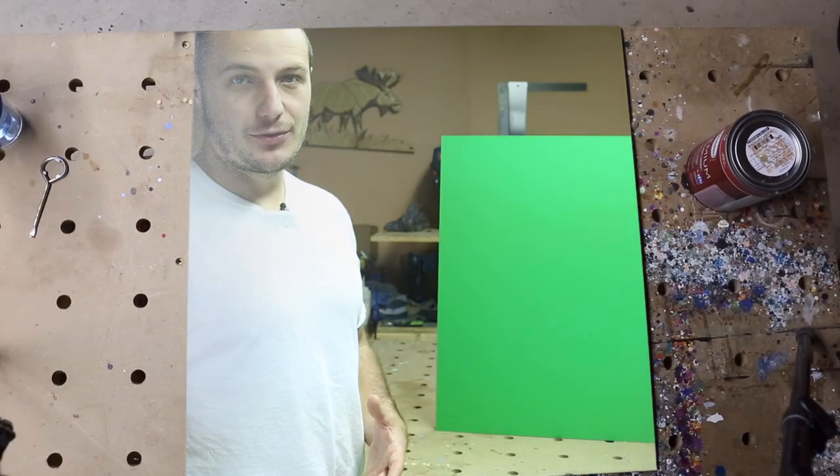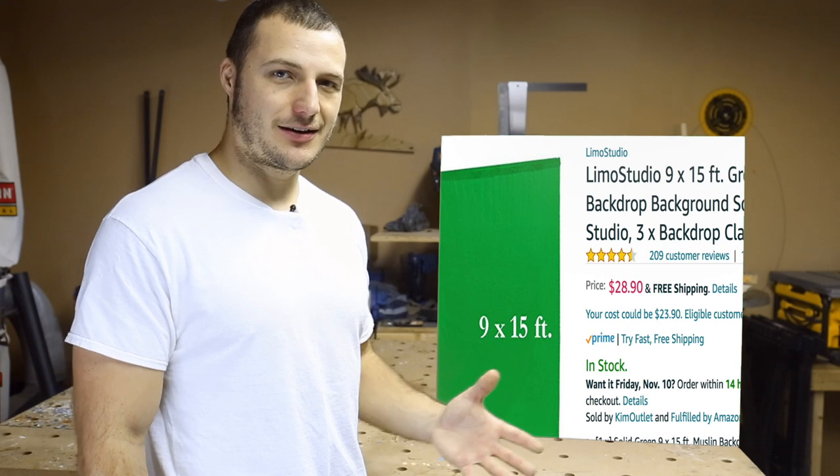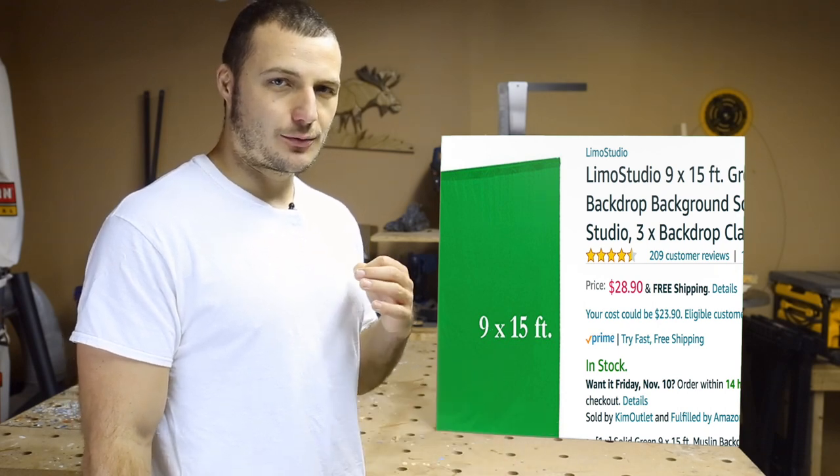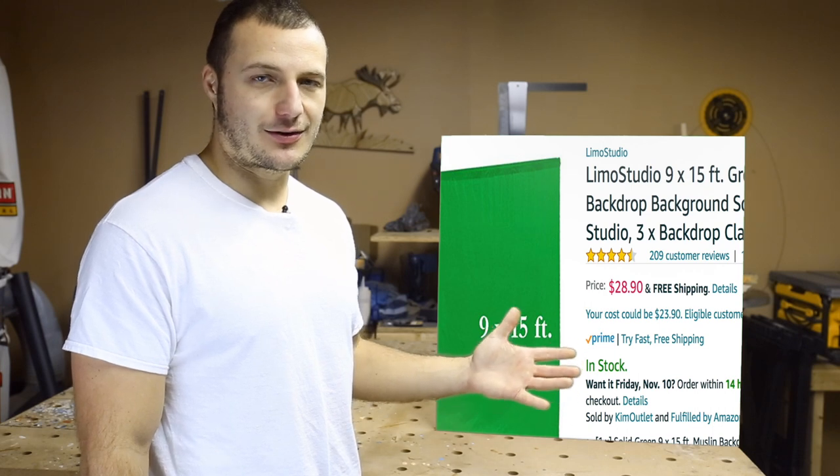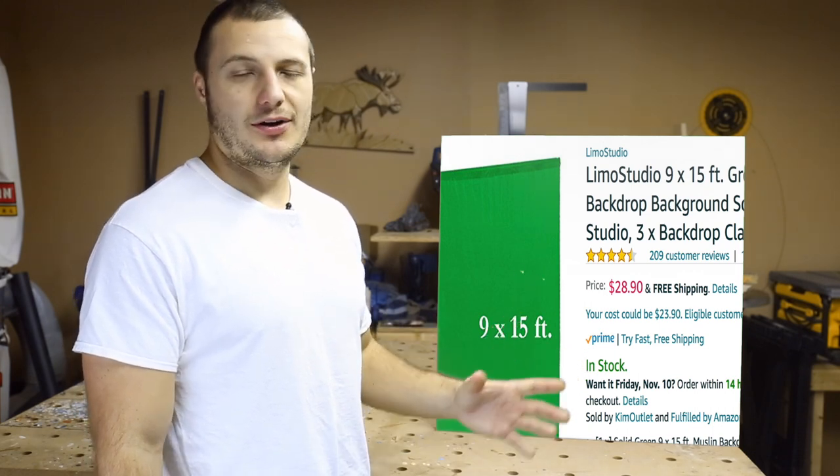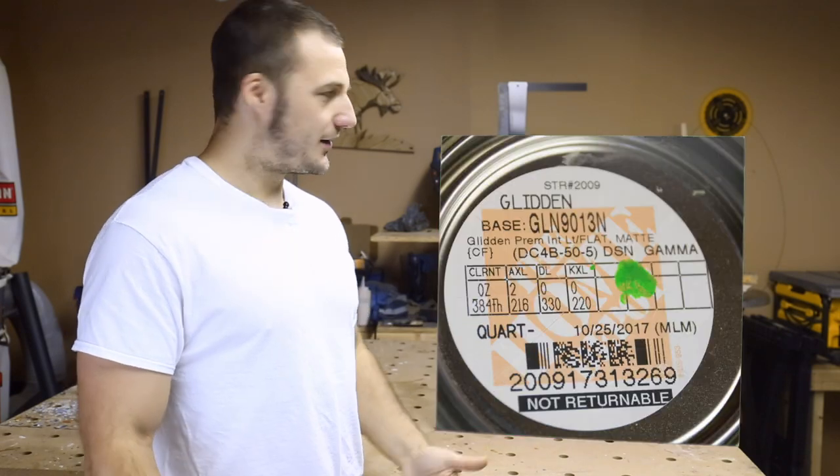Now if you just need a backdrop that's not going to move, the cloth backdrops might be the way to go. You can get them on Amazon for a really great price. I think a 9x12 is something like twenty to thirty dollars which is incredible. So if you're looking for that, I'll put a link down in the description. Otherwise, go the paint route.